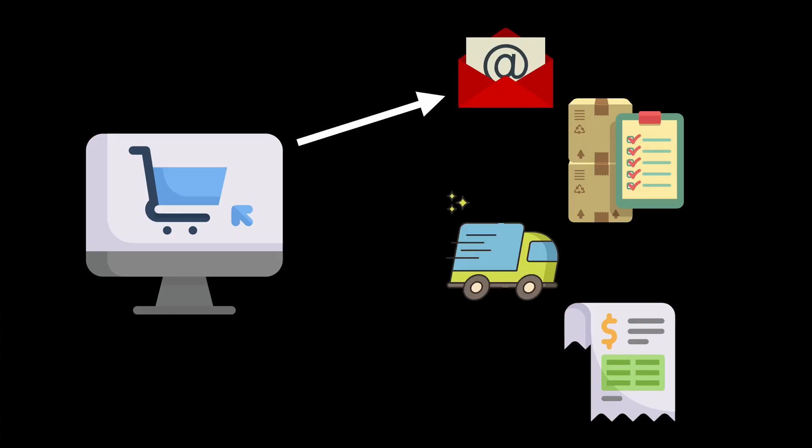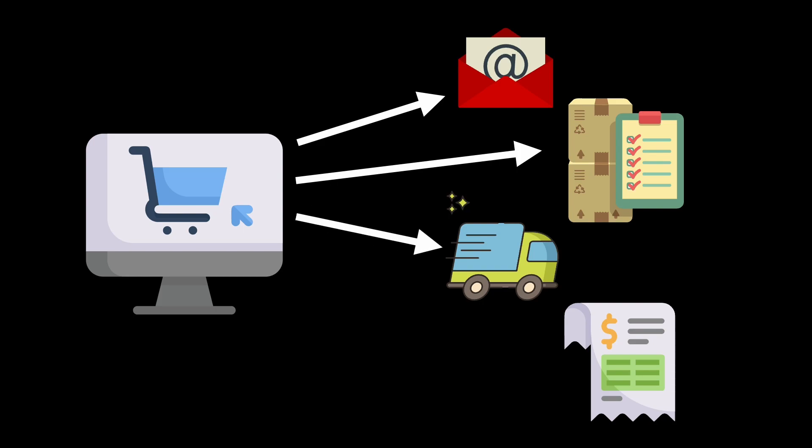In a more traditional service-to-service direct communication architecture, the e-commerce service would complete the purchase with the customer, then a number of point-to-point calls would be made. It would call each of the other four systems — likely using a REST API — to tell those services to complete their actions.